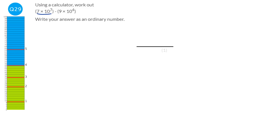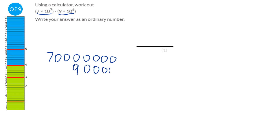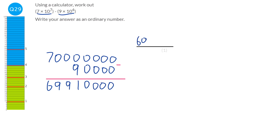The only way to answer this is to write out the numbers in full. Seven times ten to the power of seven is 70,000,000. Nine times ten to the power of four is 90,000. Subtracting gives 69,910,000. If this is the calculator paper, just type it in — there are no tricks here. You can't subtract powers; just type in what it says. There's a button on the calculator you'll need to use for standard form.